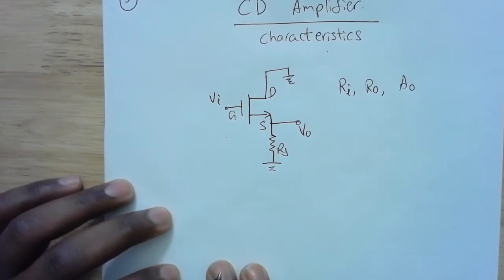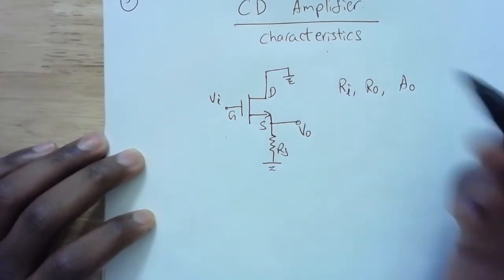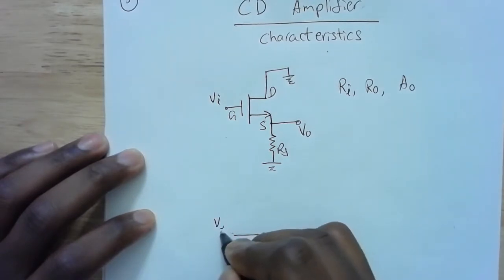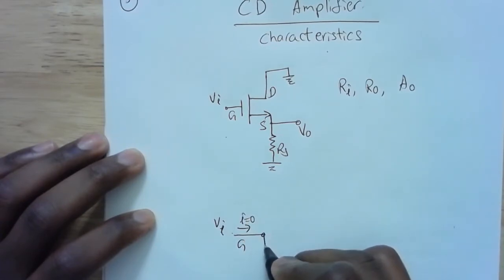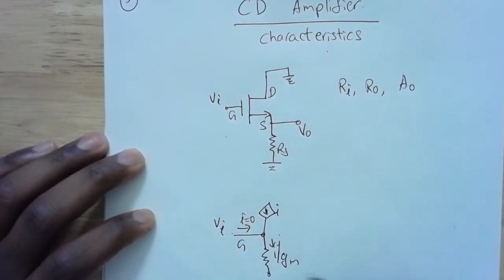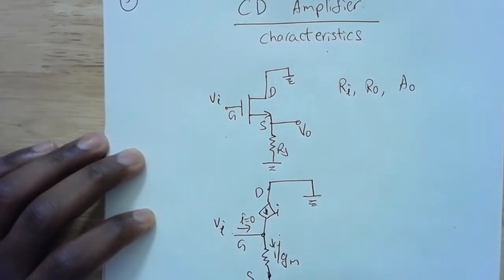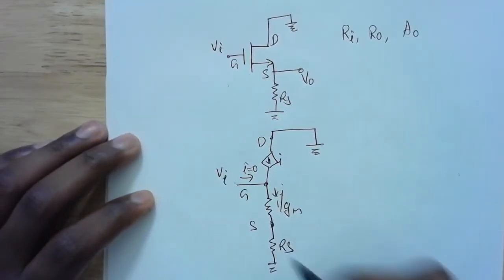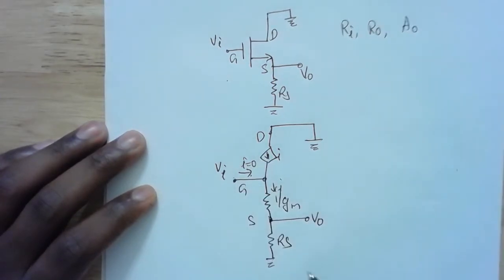The first thing I want to do is replace the MOSFET with its T-model — T-model because the source is not grounded. So VI is applied at the gate, the current going into the gate is always zero, and between the gate and source I have a resistance 1/gm. Then I have a current source whose value equals the current going in at the drain, and the drain is grounded. Between the source and ground I have RS, and the output is measured at the source.